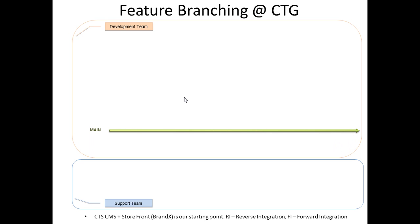We start by establishing our main branch in TFS and adding web project baseline code to it. The main purpose of this branch is to contain the golden copy for our client's codebase. The main branch is not designed for daily checkouts or check-ins. It is designed only to perform branching and merging, and no development code can be committed to this branch unless it is merged from other branches.